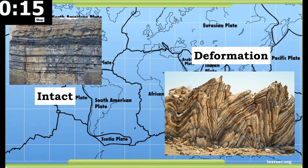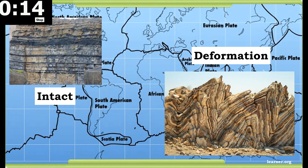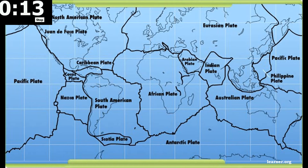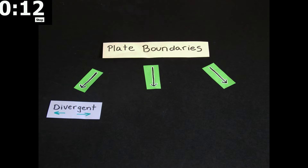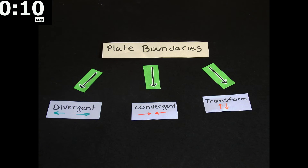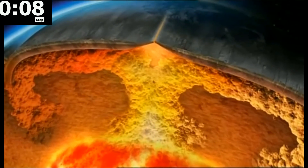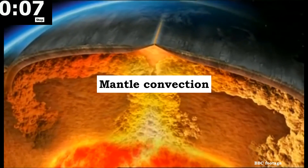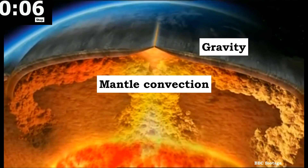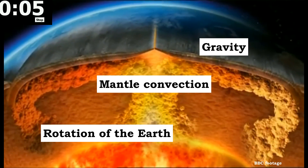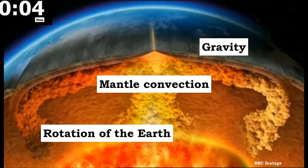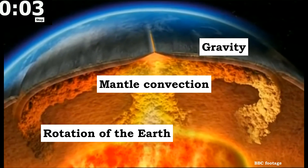As they move, tectonic plates can create three types of boundaries: a divergent boundary, convergent boundary, and transform boundary. Plate movement is driven by mantle convection, gravity, and Earth's rotation. And that was principles of plate tectonics in a minute.